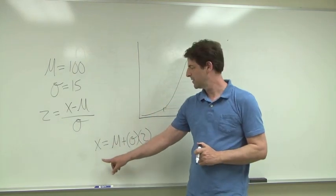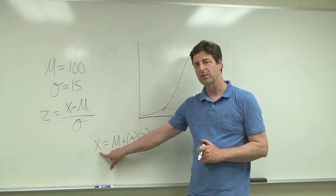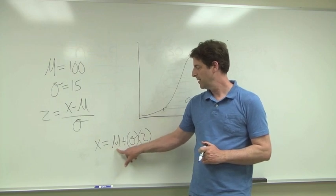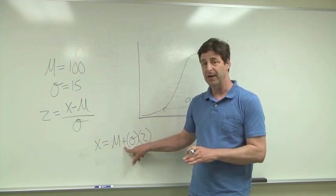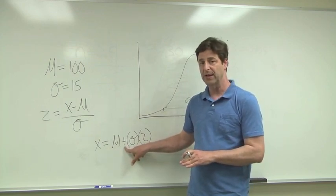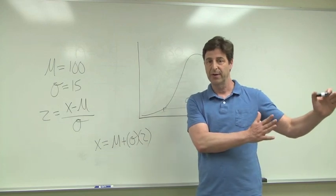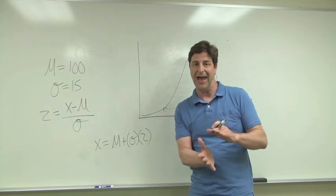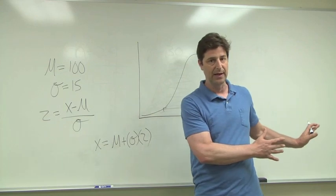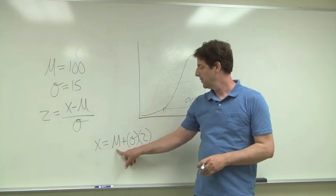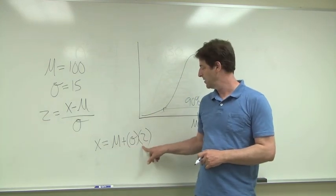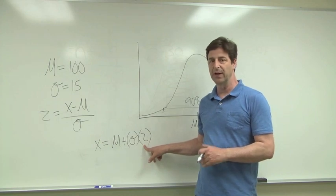The formula is this: the raw score is the mean plus, now we know it's plus because the 90th percentile is going to be above the mean, so you're going to have to add something to the mean to get to the 90th percentile. It's the mean plus the standard deviation times Z, whatever Z is.